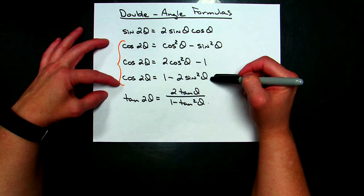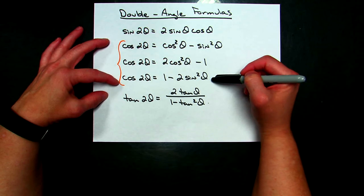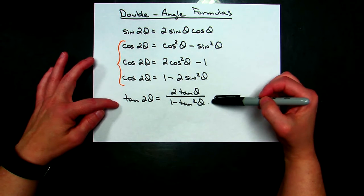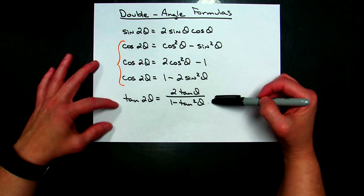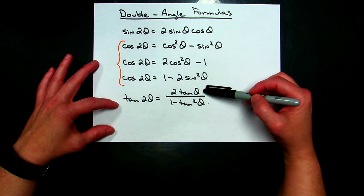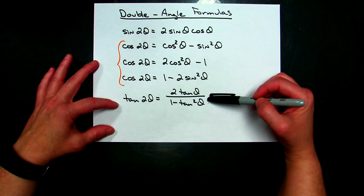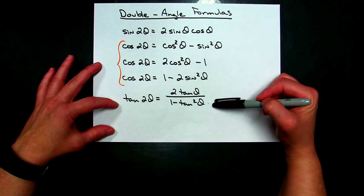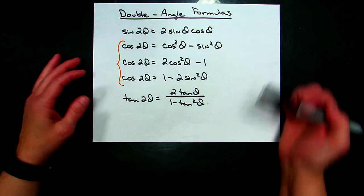If you're given the sine of theta, you would want to use the third formula so you don't have to do extra calculations. Your tangent of 2θ formula is going to be a quotient: 2 tangent θ over 1 minus tangent squared θ. We'll refer back to these as needed as we do our examples.